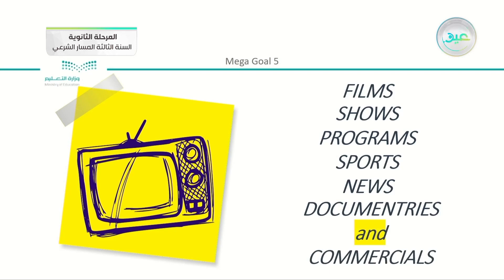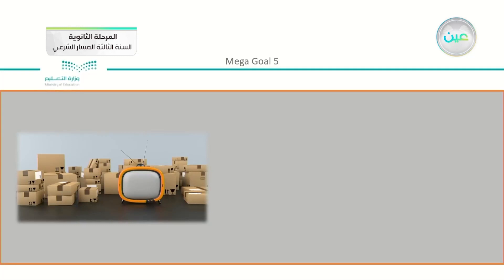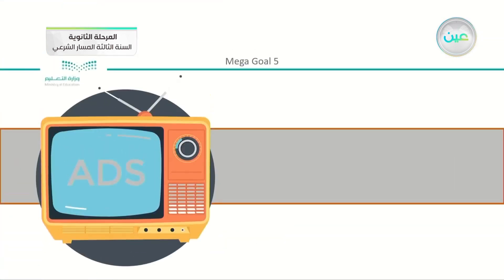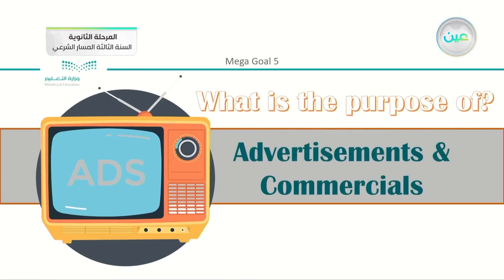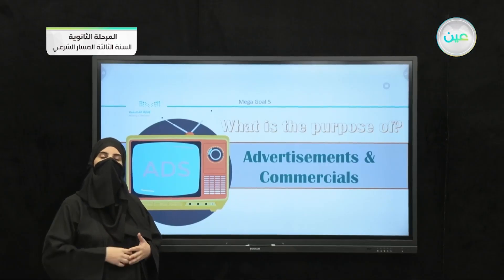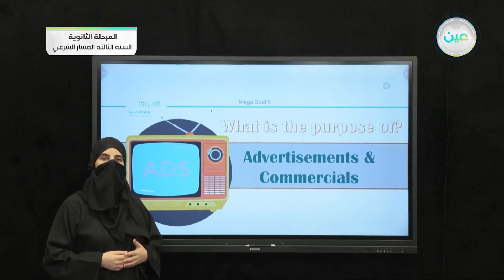Commercials are a familiar part of everyday television. We have different things that commercials are made about. In general, we have the word advertisements, or we can shorten it and say ads. So we have advertisements and commercials — we watch them all the time. What do you think the main purpose or aim is of making all these advertisements and commercials that we can see on TV?